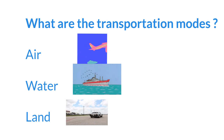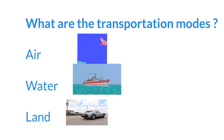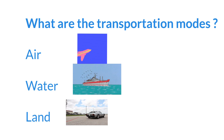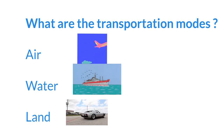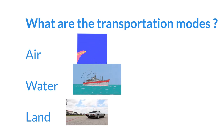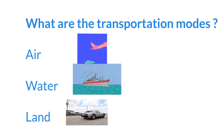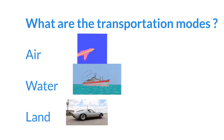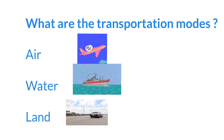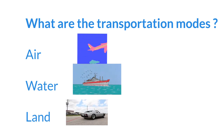Now, when you go outside, see if you can spot any land, water, or air transportation modes. Maybe you will see a car on the road, a boat on a pond, or even an airplane soaring in the sky. Thank you, KG2, for your listening. Goodbye!